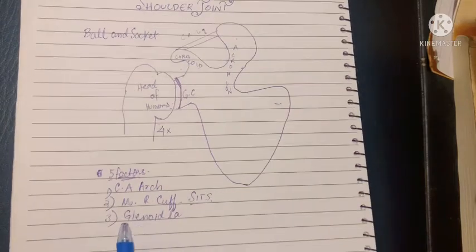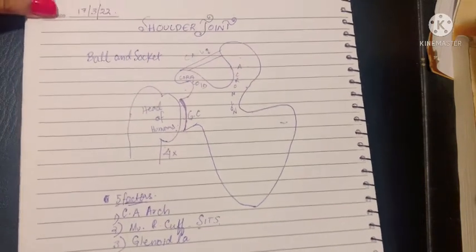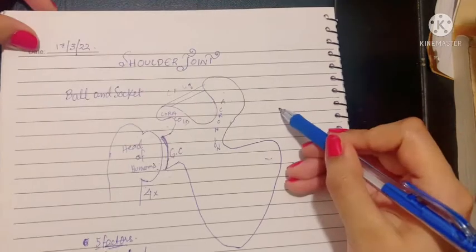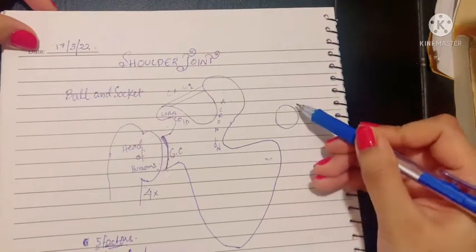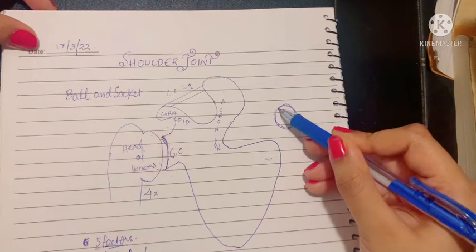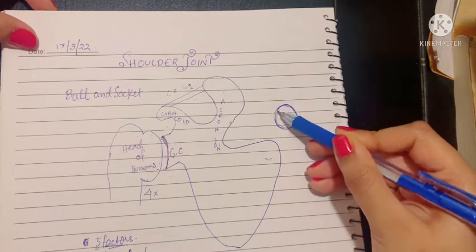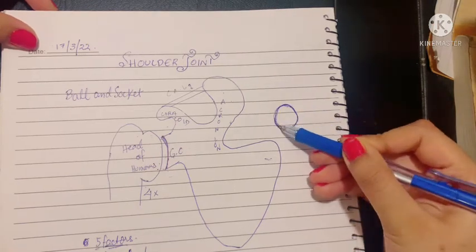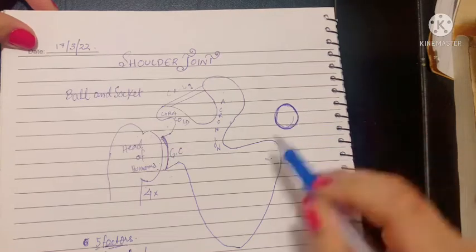The third factor is the glenoidal labrum. What is glenoidal labrum? The name says it—glenoid, meaning there is a glenoid cavity of the scapula. If you see, it's like rounded. In the margins of the glenoid cavity is attached a fibrocartilaginous rim that helps this cavity to get deepened.